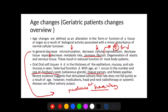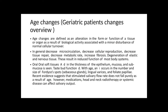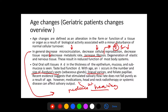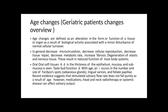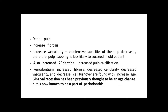Recent studies suggest that stimulated salivary flow rate does not fall purely as a result of age; other factors include medications such as atropine, head and neck radiotherapy, or systemic diseases like Sjögren's syndrome. In the dental pulp, as the patient ages, we see increased fibrosis and decreased vascularity, which lead to decreased defensive capabilities of the pulp cells. Therefore, pulp capping in older patients will be less likely to succeed.